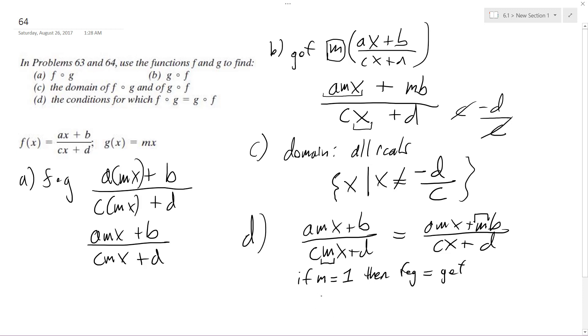And here you can see it. So if m equals one, we end up with, on the left, ax plus b over cx plus d. And then over here, if m equals one for g of f, we get ax plus b, because the m is one there, over cx plus d. So m equals one, then f of g equals g of f. That's it.